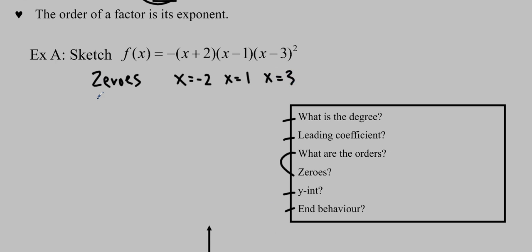The order of those zeros is the exponent of that factor — the factor's exponent. Here you can see the exponent is 1, and here 1, and here 2. So the order here is 1, the order here is 1, and the order here is 2. We can just look at the factored form and find what the orders are.